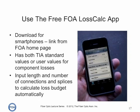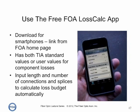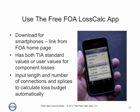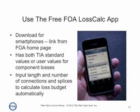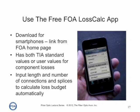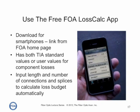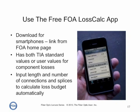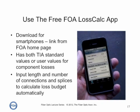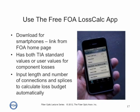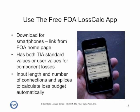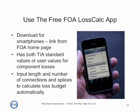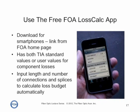There's an easy way to calculate loss budgets: just use the FOA free Loss Calc app for your smartphone. It has both TIA standard values and typical values, and those typical values can be changed by the user to any value they deem appropriate for the cable plant they're looking at. Simply input the fiber length, number of connections and splices, and it will calculate the loss budget automatically, giving you both the worst case numbers per TIA standards and the typical numbers that you input yourself.